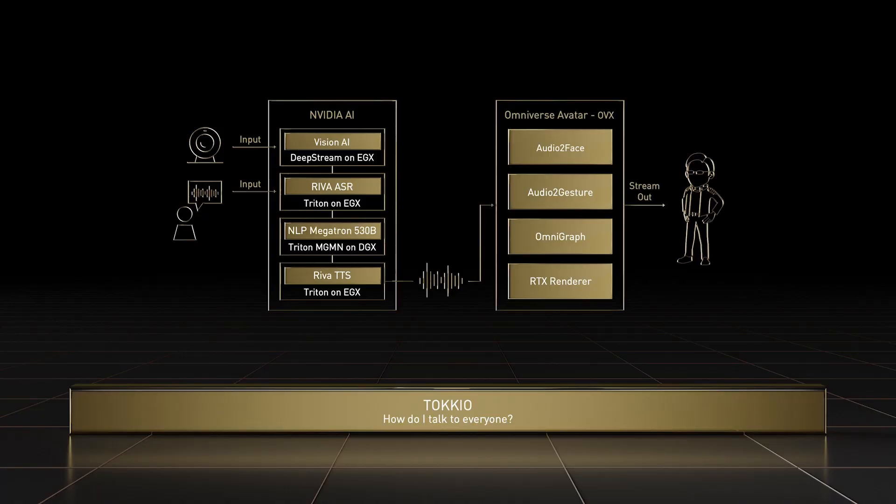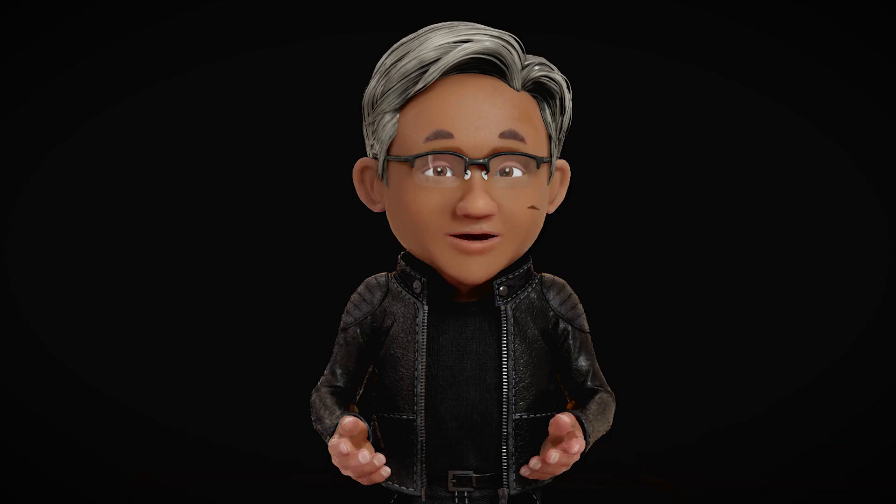Finally, I can listen and talk to you thanks to the latest in conversational AI technologies from Riva and our Megatron 530 billion parameter NLP model, one of the largest language models ever trained. Megatron helps me answer all those tough questions Jensen throws at me.